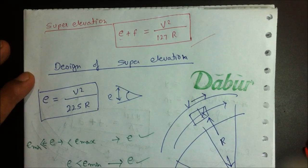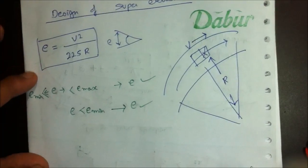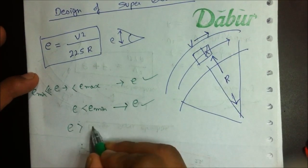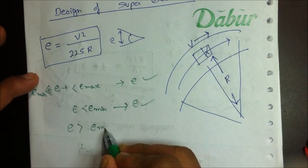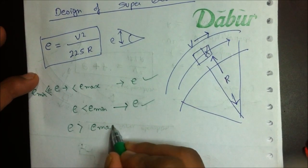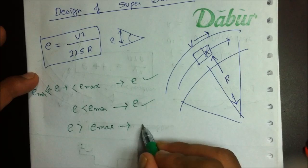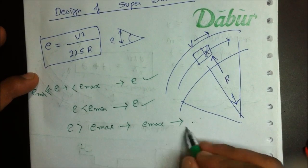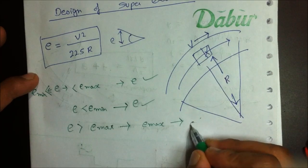The critical third case is where the calculated super elevation E is greater than the maximum allowable super elevation E_max. In this case, we provide E_max and then check for lateral friction.